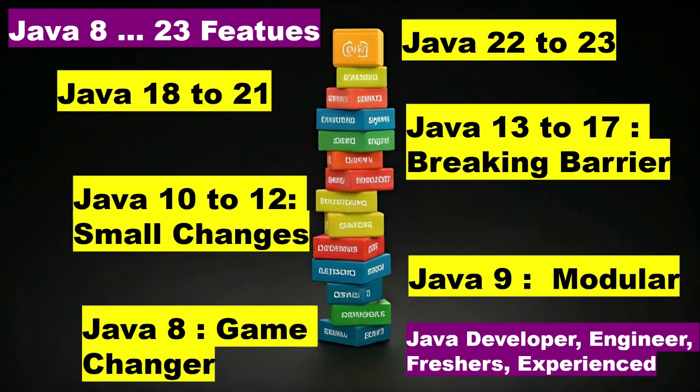Whenever you go for any Java, Spring Boot, or microservices interview, the interviewer starts with the basics of Java and will definitely call out certain versions and features. They want to know whether you are updated with the latest versions of Java. This will portray how prepared and updated you are, and how frequently you learn things — so this will give an edge to interviewers who start learning this.